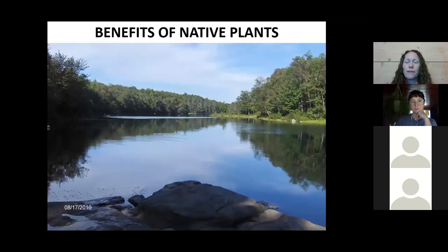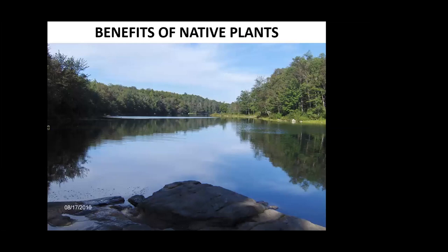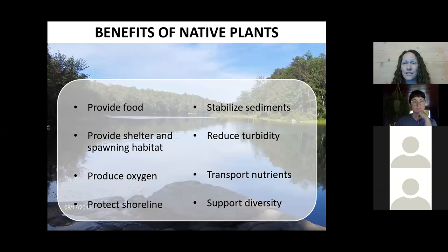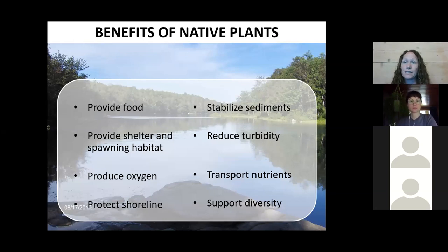I always like to highlight the benefits of our native plants, because when we talk about invasive plants we talk a lot about their impact on natives. Native plants are important in providing food for others in the food web, providing shelter and spawning habitat, producing oxygen in our lakes and rivers, protecting the shoreline from erosion, stabilizing sediments, reducing turbidity, transporting nutrients throughout the system, and supporting biodiversity by creating different micro-habitats for other organisms.